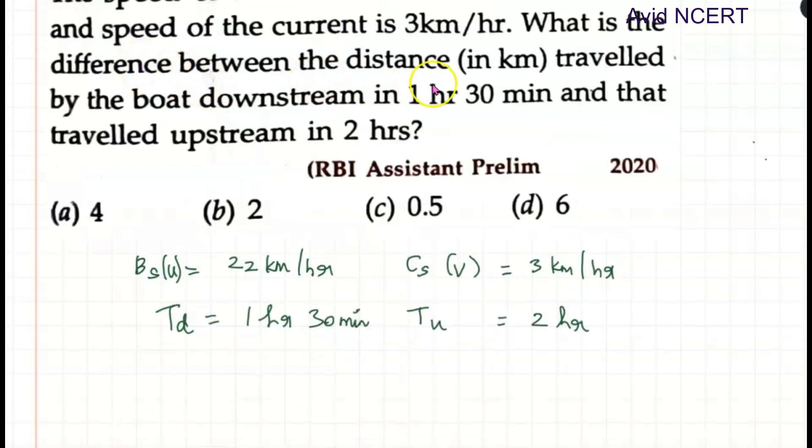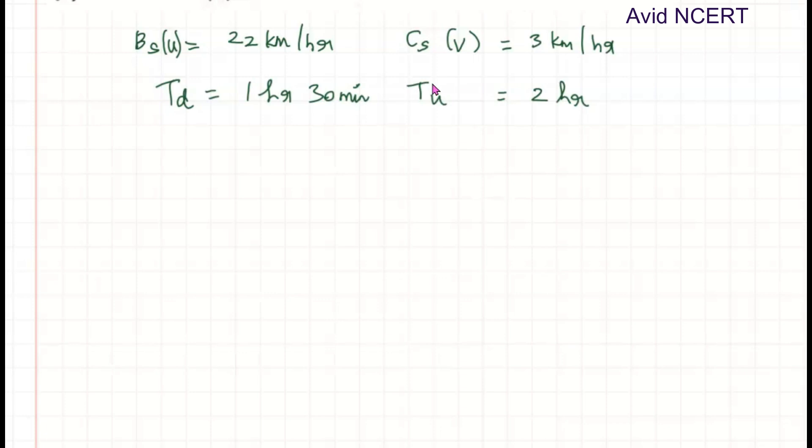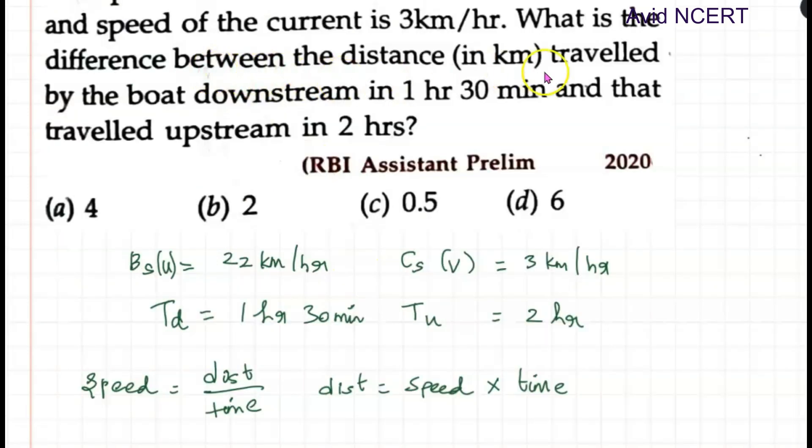The question is to find the difference between the distance. The formula we know here is speed equals distance by time, where distance equals speed into time. So difference between the distance traveled by the boat downstream and upstream.